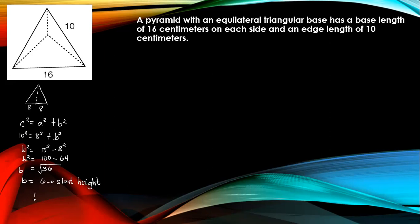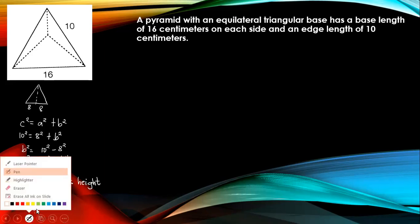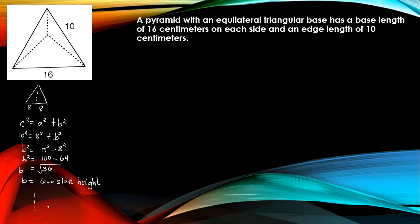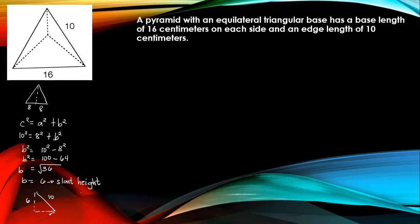So the right triangle looks like this: the edge length is 10, the slant height is 6, and the base side is 8.